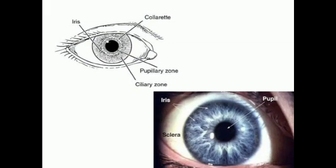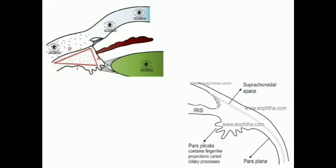The ciliary body consists of two parts: the anterior plicated or folded part called pars plicata, and the posterior flat part called pars plana. Pars plicata is the anterior folded part and pars plana is the posterior flat part. The ciliary muscle plays an important role in the process of accommodation.